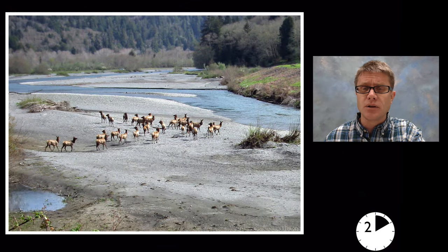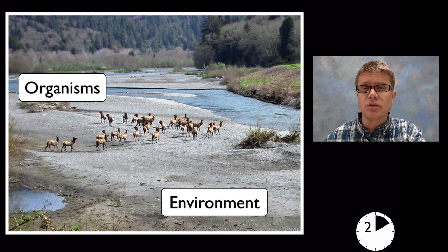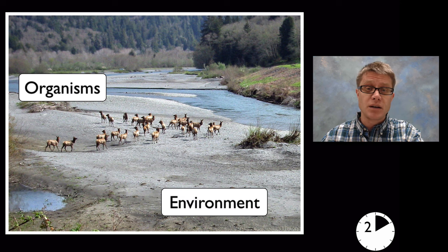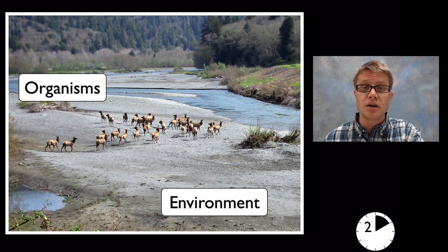Well in the elementary level, at the lower elementary grades, we want to make sure that we know the difference between what an organism is and what the environment is. And a picture like this is a great place to start. You could have them list all the organisms they can see and then what are all the parts of the environment.